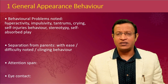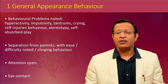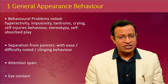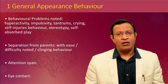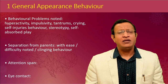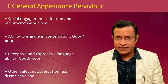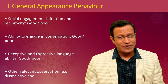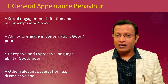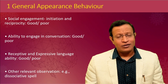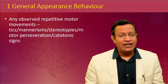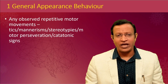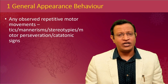For general appearance and behavior, note impulsivity, temper tantrums, crying, self-injurious behavior, stereotypies, self-absorbed play, whether the child clings or explores the world while seeking reassurance, attention and concentration, social engagement, ability to engage, and receptive and expressive language. Also check for dissociative spells and any abnormal motor movements such as tics, mannerisms, stereotypies, catatonic signs, and perseveration.